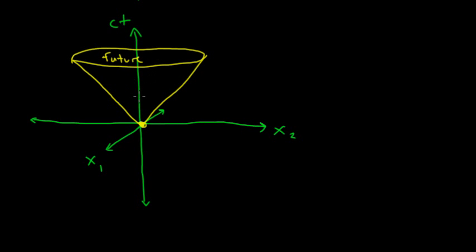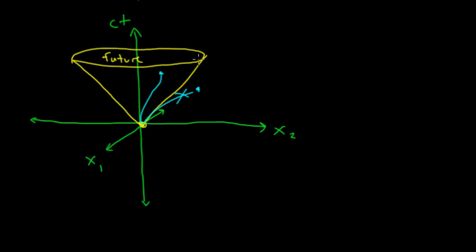We call it the future light cone because inside this cone are all the events — all the positions and times of different locations in this space-time — that I can get to traveling at the speed of light or less. If I want to get to a certain location here, I can fly a little ship over there and make it. But if I want to get to some point out here, even traveling at the speed of light I'm not going to make it in time, because we can't go faster than the speed of light. So we consider this set of events to be our future.